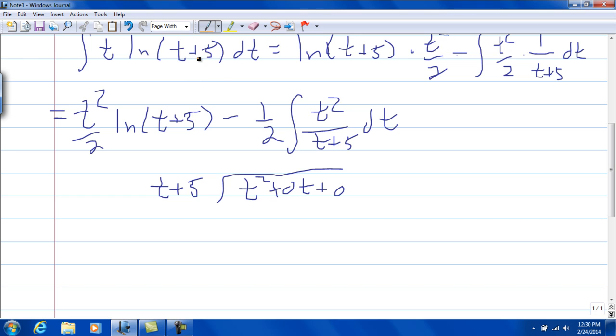And t times what is t squared? It's going to be t. So t times t is t squared, t times 5 is 5t. Subtracting, so I'm going to do this subtraction here. t squared minus t squared is nothing, 0t minus 5t is negative 5t, plus 0.